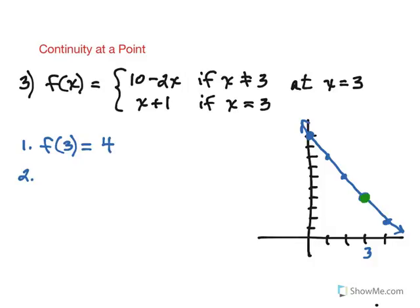Second step is that the limit as we approach 3 of this function has to exist. Of course we do need to consider both the left and right hand limits. If you wanted to do this graphically you could. There's 4. And you can see that the graph is approaching the y value of 4 as you approach the x value of 3 both from the left and from the right.